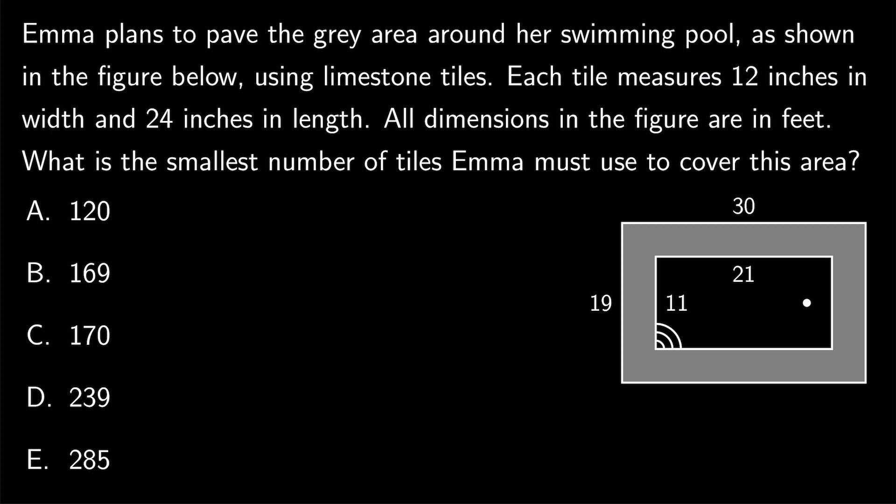Alright, let's solve this problem. Emma plans to pave the gray area around her swimming pool as shown in the figure below using limestone tiles. Each tile measures 12 inches in width and 24 inches in length. All dimensions in the figure are in feet. What is the smallest number of tiles Emma must use to cover this area?